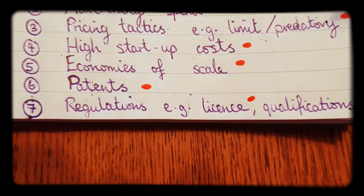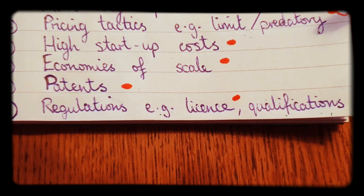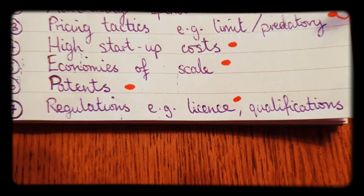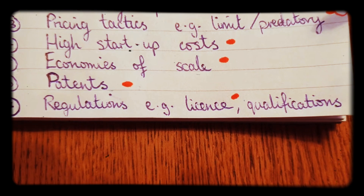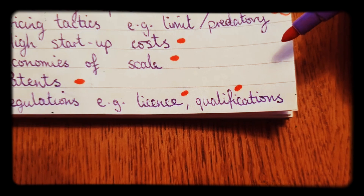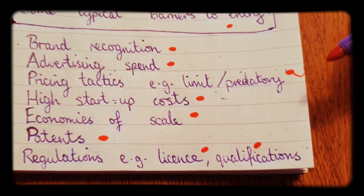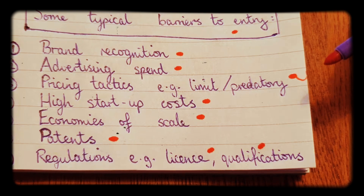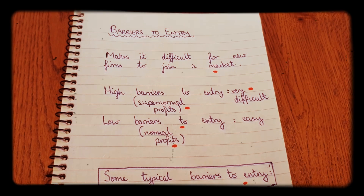Another barrier to entry is other regulations. In certain industries you may require a license to sell something — for example, if you want to open a pub or an off-licence, you're going to need an alcohol license, which not everyone is able to get. In other industries you may need certain qualifications, which not everyone has, because you have to go to university or get training of some sort. That also acts as a barrier to entry.